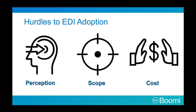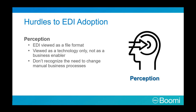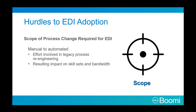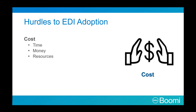There are three hurdles new companies must overcome in EDI adoption: perception, scope, and cost. With perception, EDI is often viewed as just a file format, when in fact it is much more — it is also a business enabler. Many companies do not recognize the need to change manual business processes. The scope of process change needed for EDI is large, with effort involved in legacy process re-engineering, impacting both skill sets and bandwidth. Finally, there are demands on time, money, and resources — but the payoff at the end can be big. This concludes our introduction.